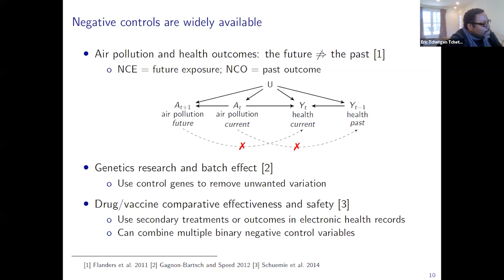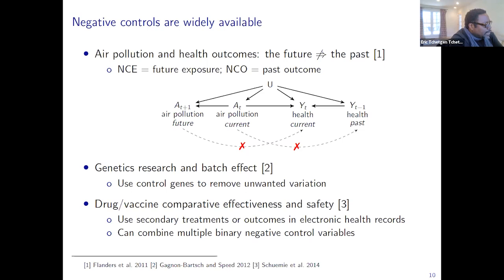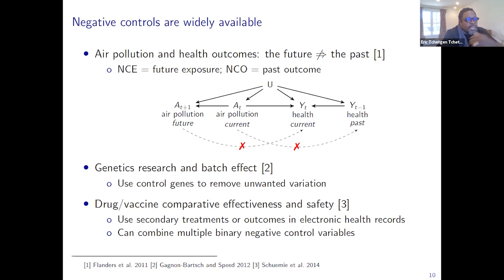Beyond these examples, negative control variables have also been used in genetic research and batch effects, using biological knowledge to identify control genes to remove unwanted variation—the name they give to confounding. In the context important to our discussions today—drug and vaccine comparative effectiveness and safety—use of secondary treatments or outcomes in chronic healthcare records, particularly those outcomes explored for safety reasons and for which no evidence of association with the treatment at hand can be found, can be recycled as potential negative control exposures or outcomes.